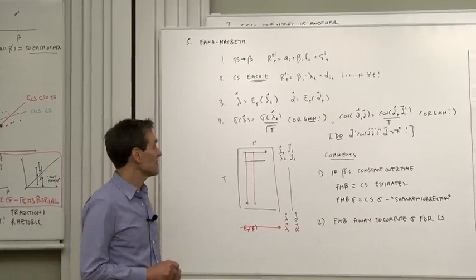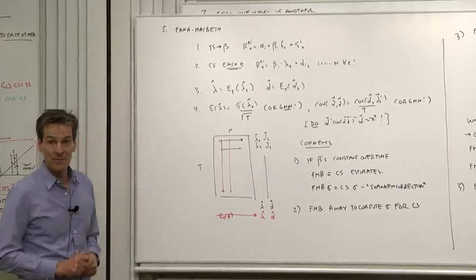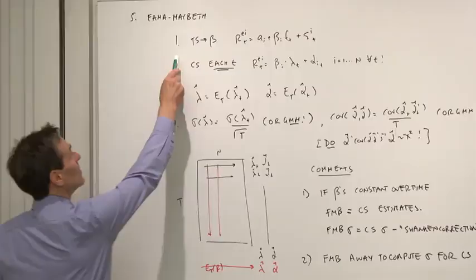So our next approach to estimating asset pricing models in expected return beta form, the Fama-Macbeth procedure. Here's the procedure.